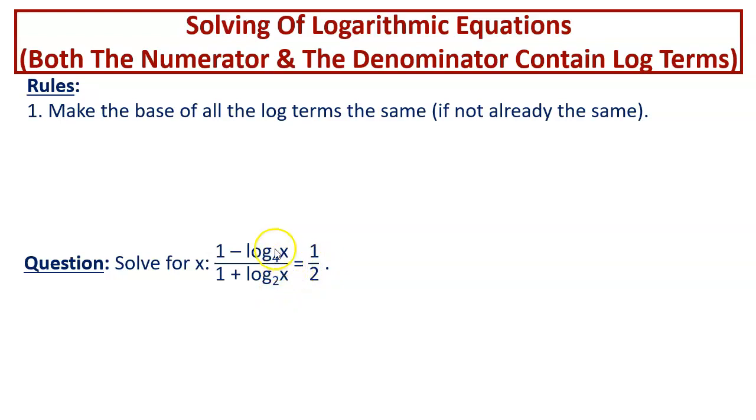So first of all, we change this term log of x to the base 4. We make the base as 2 because this is already in base 2. So log of x to the base 4 is equal to log of x to the base 2 over log of 4 to the base 2.